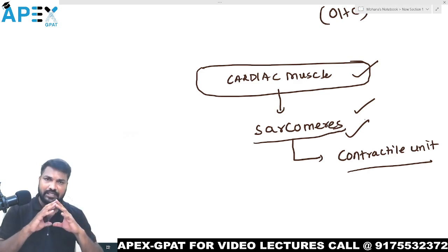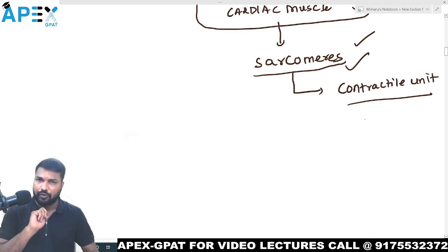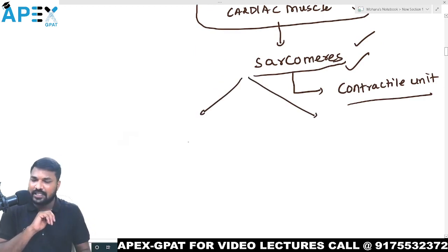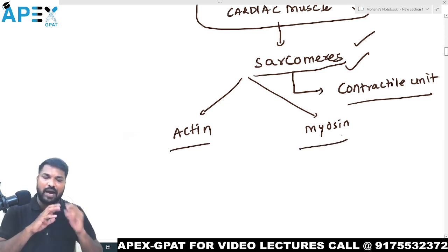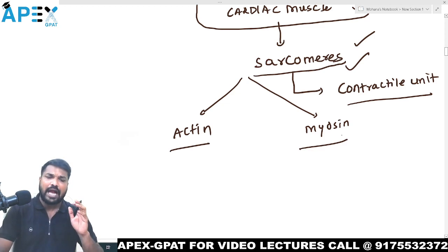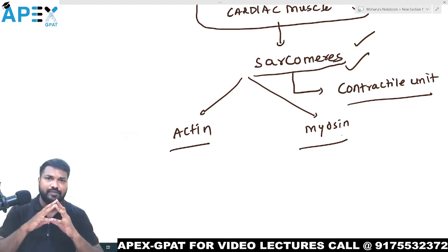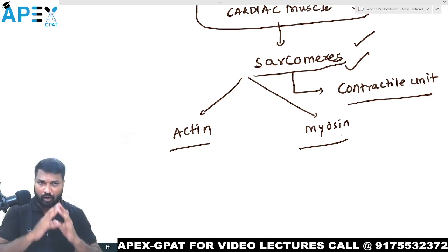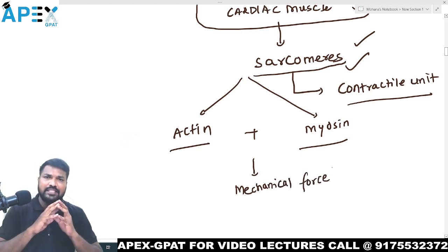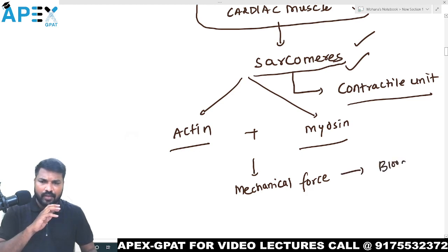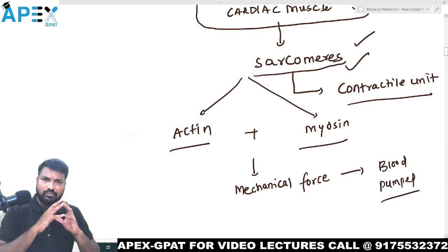The sarcomere contains two protein units: one is actin and another is myosin. When actin and myosin interact, there is generation of mechanical force. When mechanical force is generated, the blood will be pumped all over the body parts through the aorta.